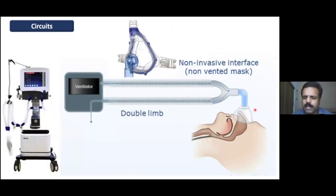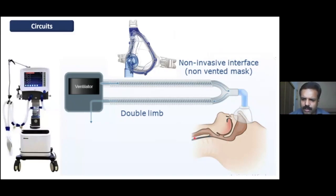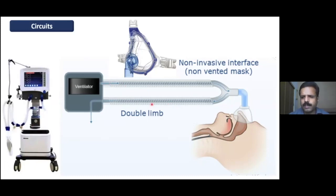In a dual limb circuit, there is an inspiratory port through which gas goes in, and the patient exhales gas through the expiratory limb. This is typically used with an ICU ventilator in non-invasive ventilation mode. When using a dual limb circuit, the mask must be non-vented — there should be no air leak from the mask, because there is a dedicated expiratory port.